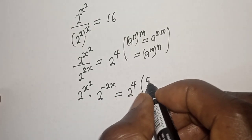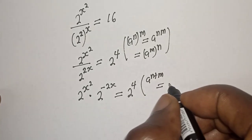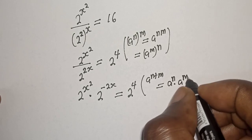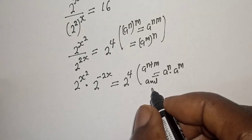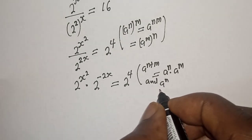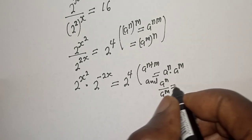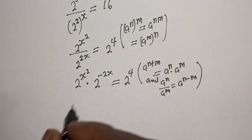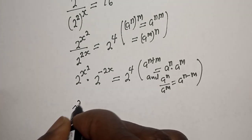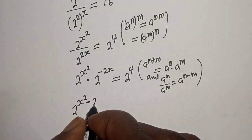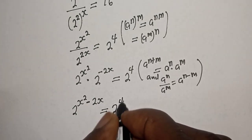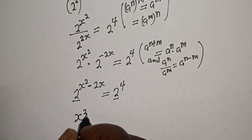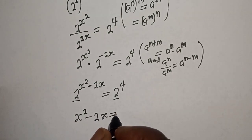From the exponential rule, a raised to power n to the power of m equals a raised to power nm. Also, a raised to power n plus m equals a raised to power n multiplied by a raised to power m. And a raised to power n over a raised to power m equals a raised to power n minus m. Using these rules, we have 2 raised to power s squared minus 2s equal to 2 raised to power 4. Since the base is 2, we work with exponents: s squared minus 2s is equal to 4.